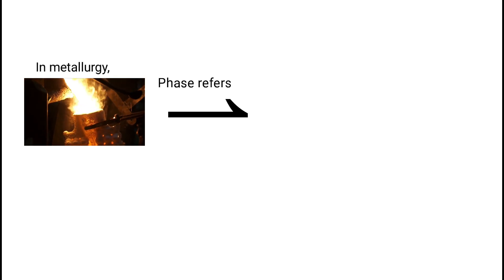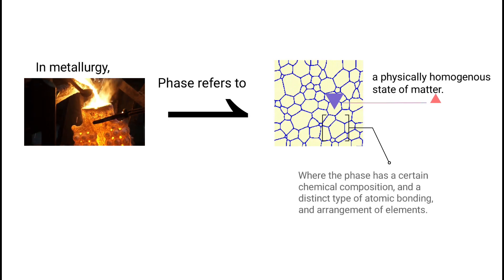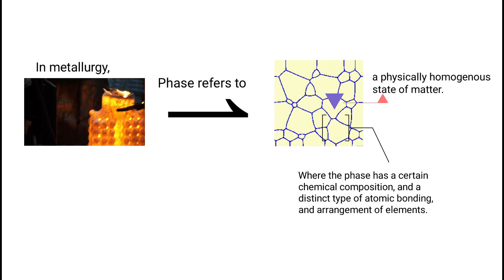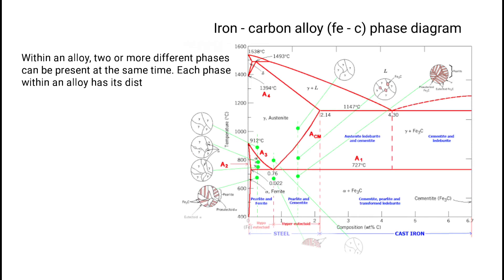In metallurgy, the term phase is used to refer to a physically homogenous state of matter where the phase has a certain chemical composition and a distinct type of atomic bonding and arrangement of elements. Within an alloy, two or more different phases can be present at the same time.